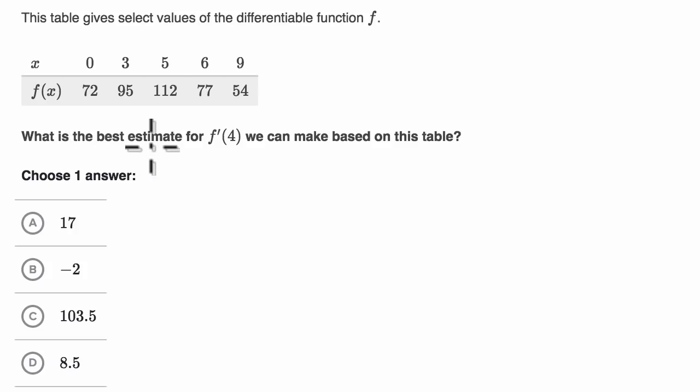And they say, what is the best estimate for f prime of four? So this is the derivative of our function f when x is equal to four. Or another way to think about it, what is the slope of the tangent line when x is equal to four for f of x? So what is the best estimate for f prime of four we can make based on this table?